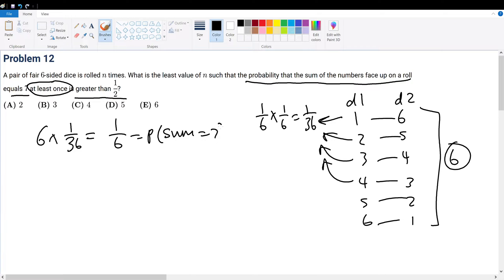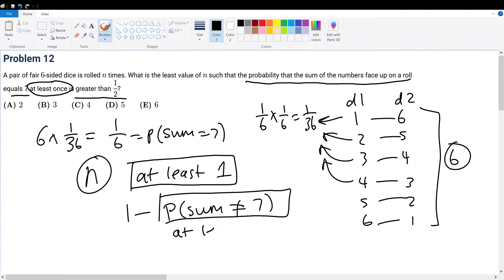Now, what about 'at least once'? The probability of rolling these dice n times with at least one success where the sum equals 7? Let's use complementary counting. If there must be at least one success, that means 1 minus the probability the sum is not equal to 7, because this probability would be where everything fails.